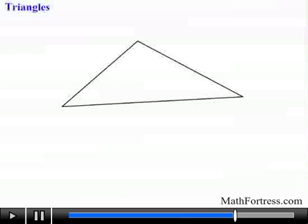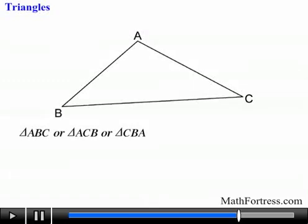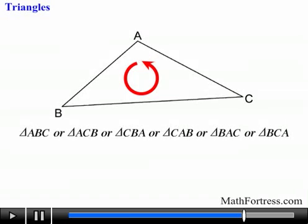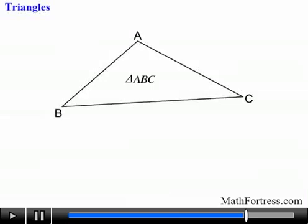Alright, the final figure we will talk about is formed by using three segments and combining them in the following way. The figure that we just created is called a triangle and we denote it as follows: triangle ABC or triangle ACB or triangle CBA or triangle CAB or triangle BAC or triangle BCA. Notice that the letters need to start at one point and move either clockwise or counterclockwise when denoting them. The convenient way is once again by using letters that are in alphabetical order whenever possible. So triangle ABC would be the best way to describe this triangle.